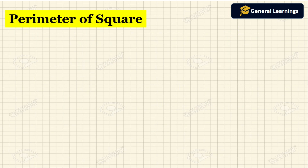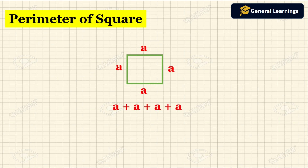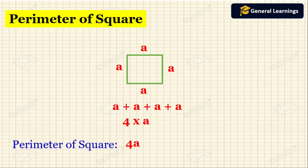Now we are going to see the perimeter of a square. Here they have given a square whose sides are all a, because in a square all sides are equal. Perimeter is the sum of all sides, so a plus a plus a plus a, which can be written as 4 times a. So the perimeter of the square is 4a. To find the perimeter of a square, multiply the side by 4.